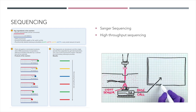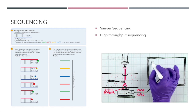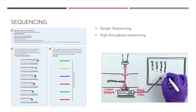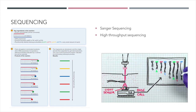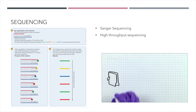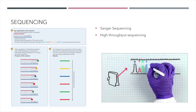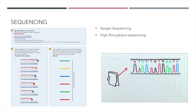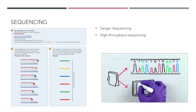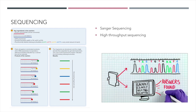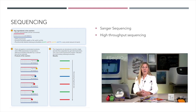Software interprets the detected signal and translates it into a base call. When the sequencing reaction is performed in the presence of all four terminated nucleotides, you get a pool of DNA fragments measured and separated base by base. The result is a data file showing the DNA sequence in a colorful electropherogram and a text file you can use to answer your questions. And that, in a nutshell, is Sanger sequencing.